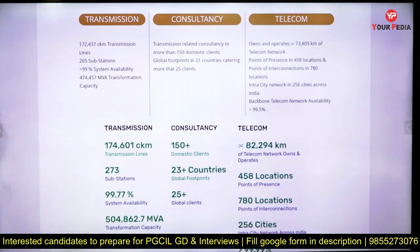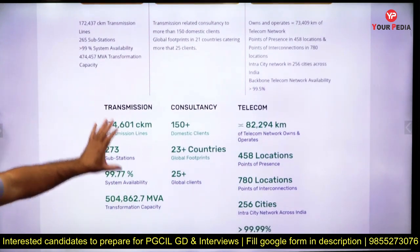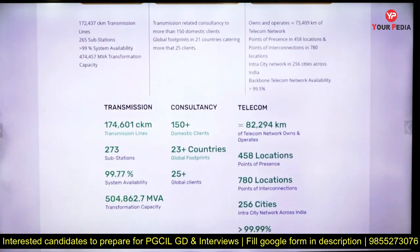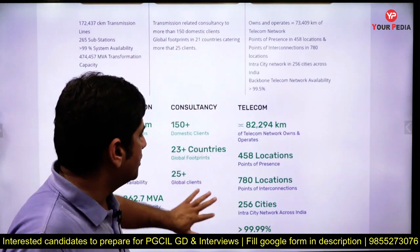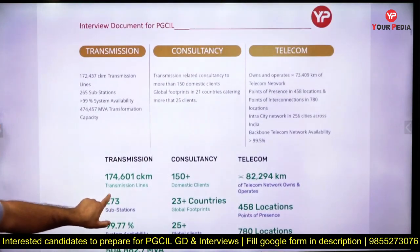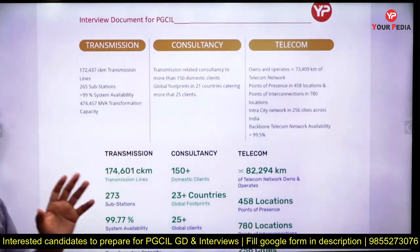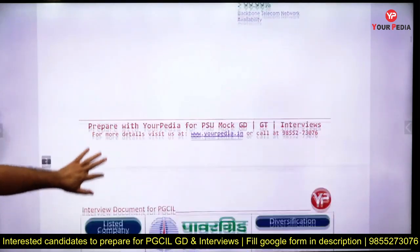Details are provided on how many kilometers of transmission lines there are, how many substations, and the consultancy areas. In telecom, how many locations are there and what kind of network exists. So these are the three business verticals — if asked in the interview, you should say Power Grid is into transmission, consultancy, and telecom.